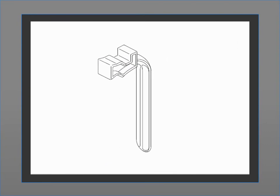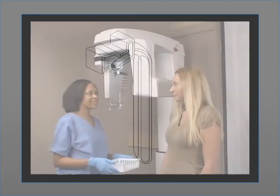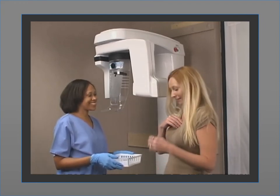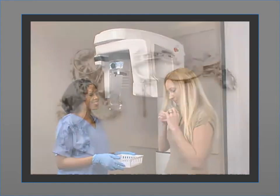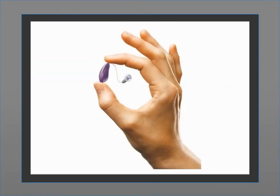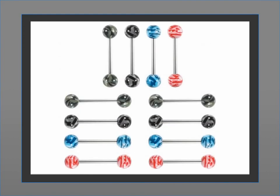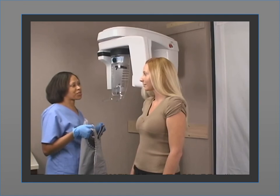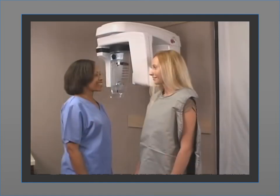For edentulous patients, use an edentulous bite block. Before the patient enters the machine, ask the patient to remove any metal objects above the neck, including jewelry, glasses, hearing aids, prosthesis, metal hair clips, or other metal objects. Place the lead apron on the patient and instruct the patient to stand next to the unit.